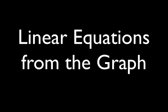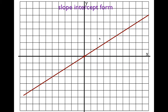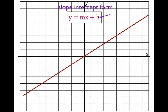In today's video, I'm going to show you how to write the linear equation of a line from the graph of the line. We're going to write all of these equations in the slope-intercept form: y equals mx plus b. It's called the slope-intercept form because b is the y-intercept, and m is the slope.